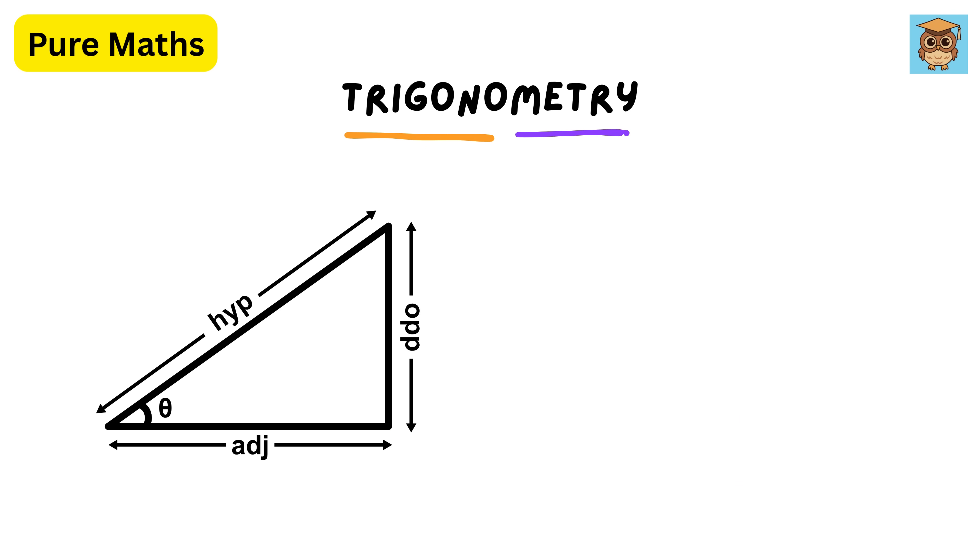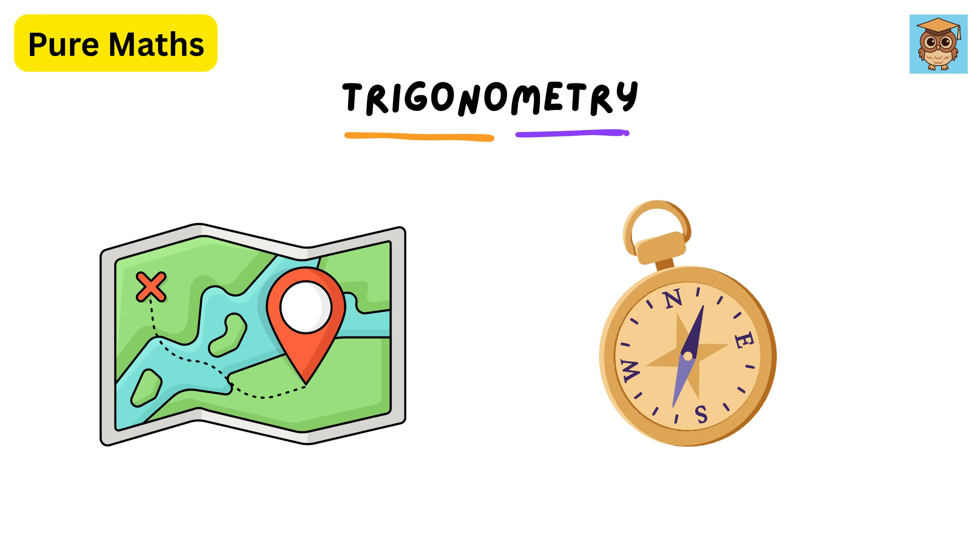At its core, trigonometry deals with six key functions, which let you calculate unknown sides or angles if you know some of the others. If you've ever used a map or a compass, you've already used basic trigonometry without realizing it.